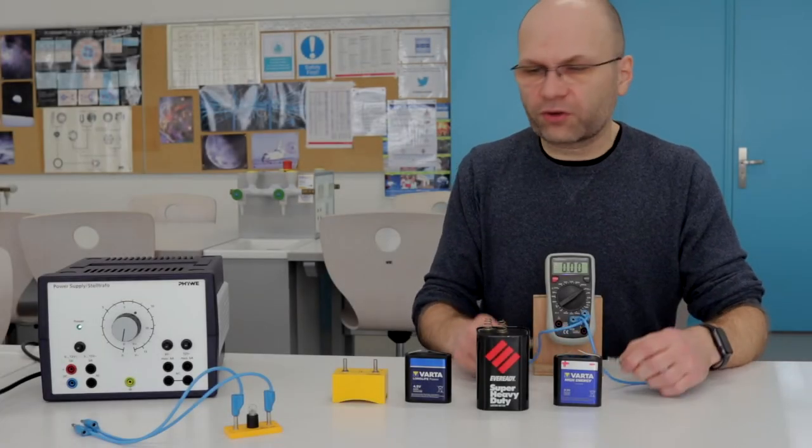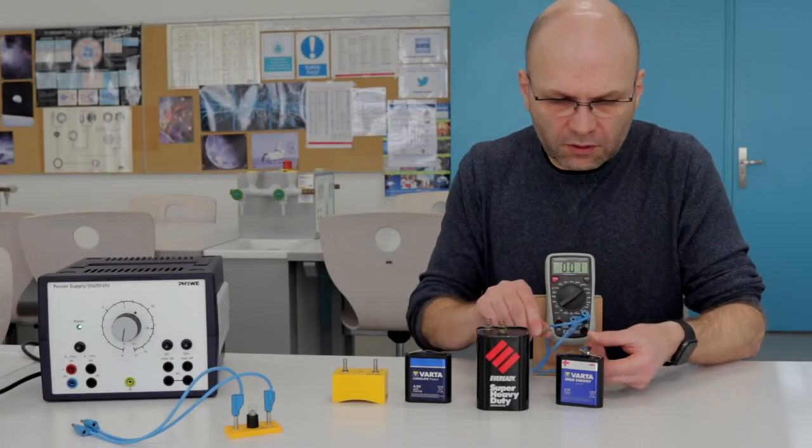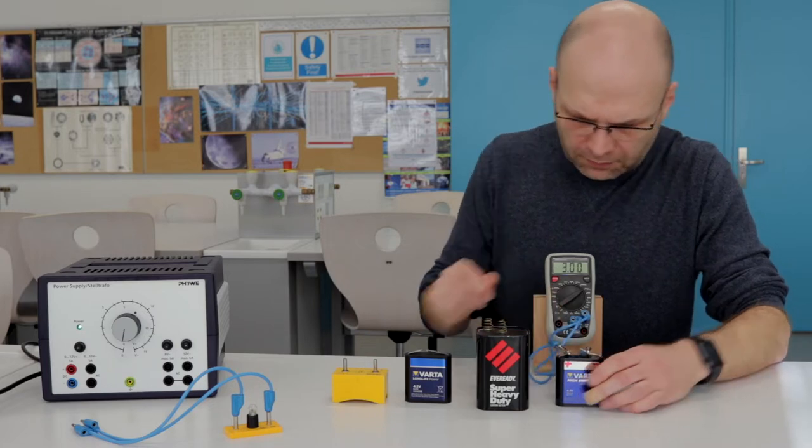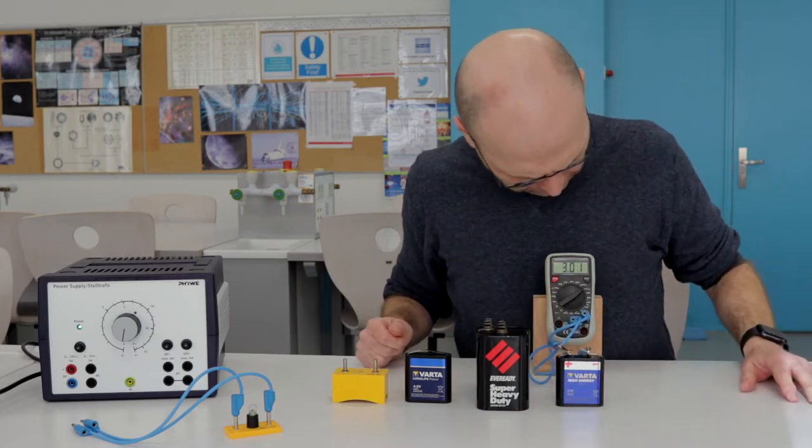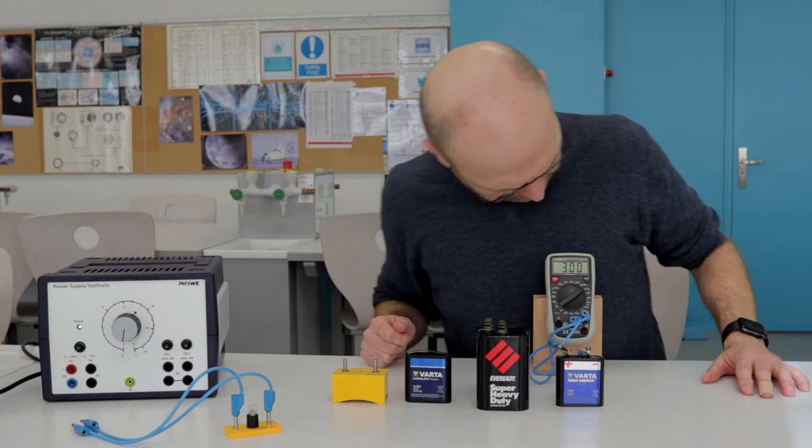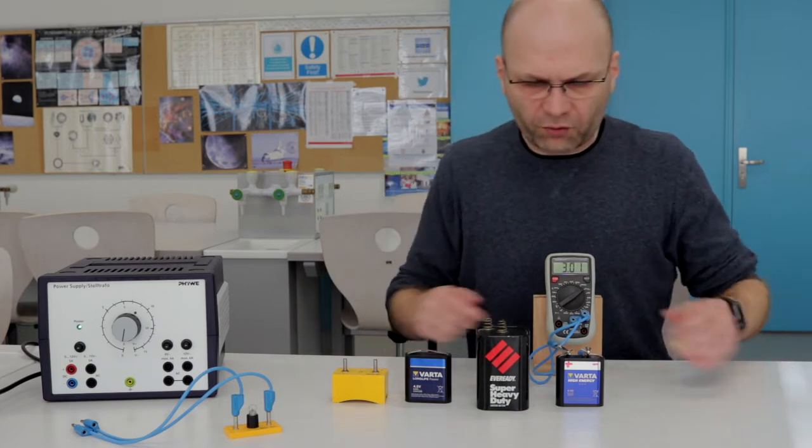Now let's connect this voltmeter across each of the batteries. So the first one, the reading, if it's not visible from a distance, is 3.01 volts.